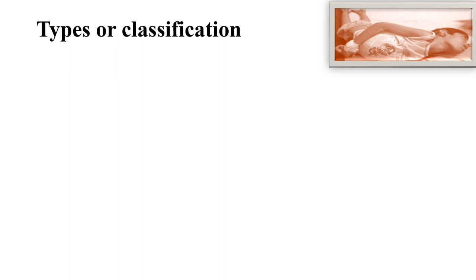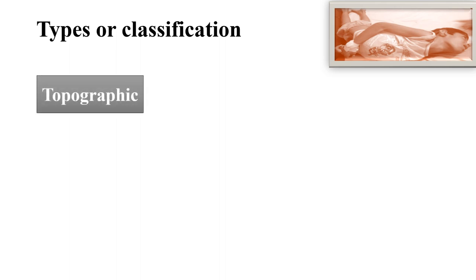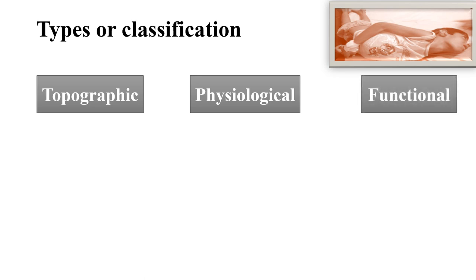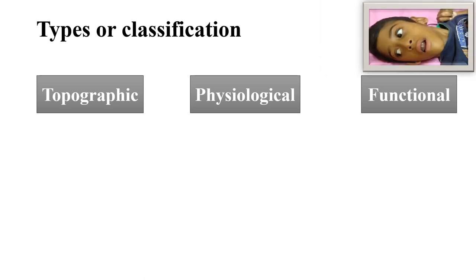The types or classification of CP is the most important part for diagnosis. There are three main classifications: topographic classification, physiological classification, and functional classification. Topographic classification indicates the involved extremities; physiological classification identifies the major motor abnormality present in a child; and functional classification tells about the severity of the condition. These three classifications are essential for UG and PG exam purposes.